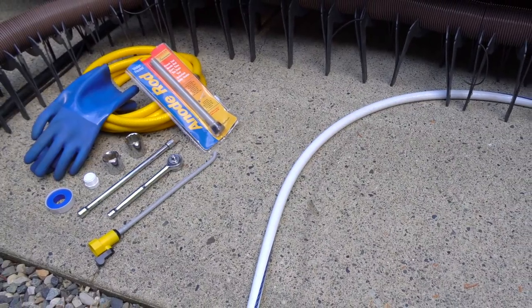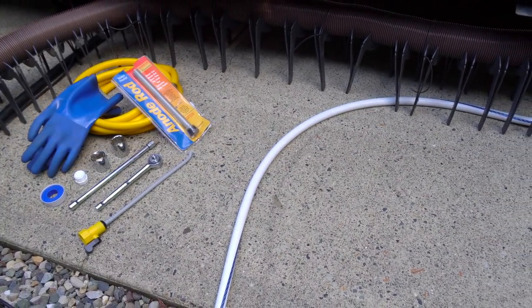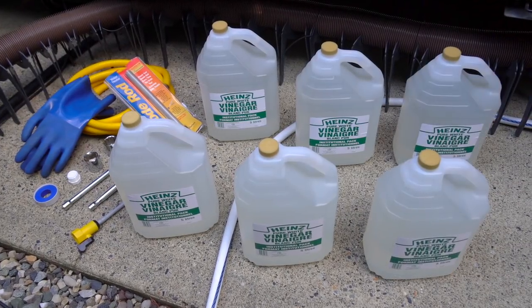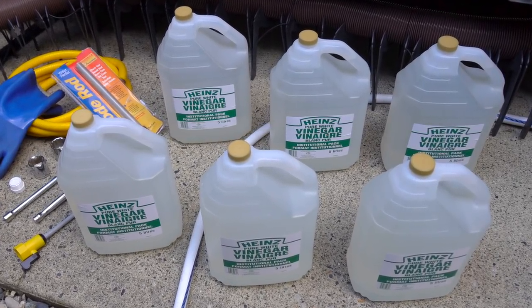The one change we're making this time, based on last year's experience, is upping the amount of vinegar we're using from 20 liters to 30 liters. That's an increase from about 5 1⁄4 gallons to about 8 gallons.